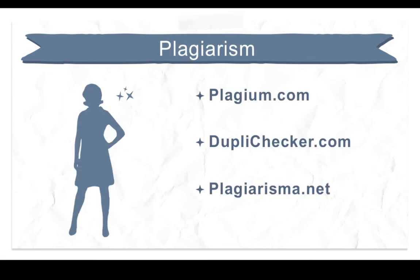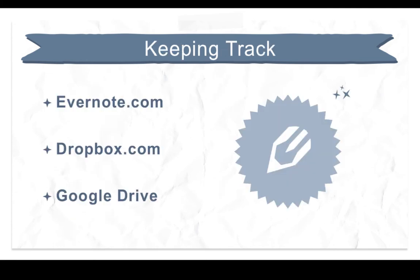Being able to show that your opponent's ideas are not original could also be a boon to your campaign. There are many free websites that help you determine who your opposition and policymakers are quoting — some examples include Plagium, Duplichecker, and Plagiarisma. You'll need to store all your research results. Evernote is a free note-taking and archiving service that lets you store text, webpages, photos, voice memos, and more. You can also use a free cloud storage service like Dropbox or Google Drive to store and share your work. Before you choose a cloud storage service, be sure to explore their latest security features.